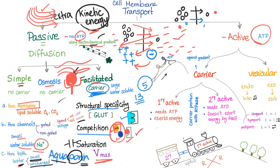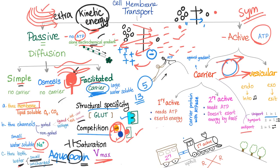The second type of active transport is vesicular: endocytosis and exocytosis. Mnemonic — 'endo' means into the cell, 'exo' means exit the cell. Carriers can also have three configurations: uniport (one molecule moved in one direction), symport (two molecules moved in the same direction — like 'symmetric'), and antiport (two molecules moved in opposite directions).